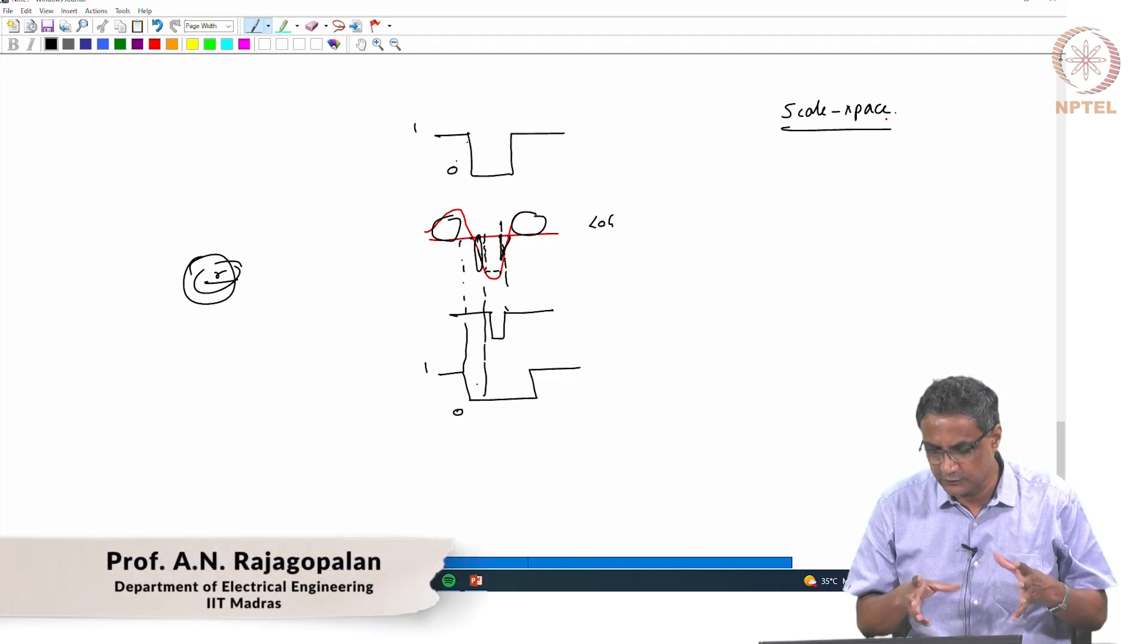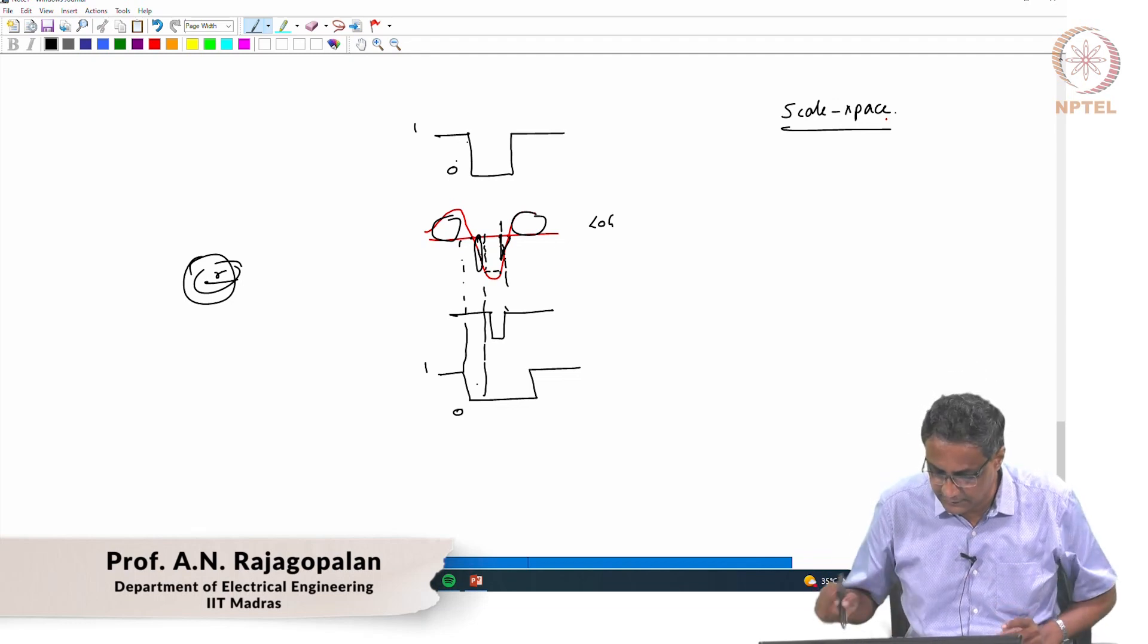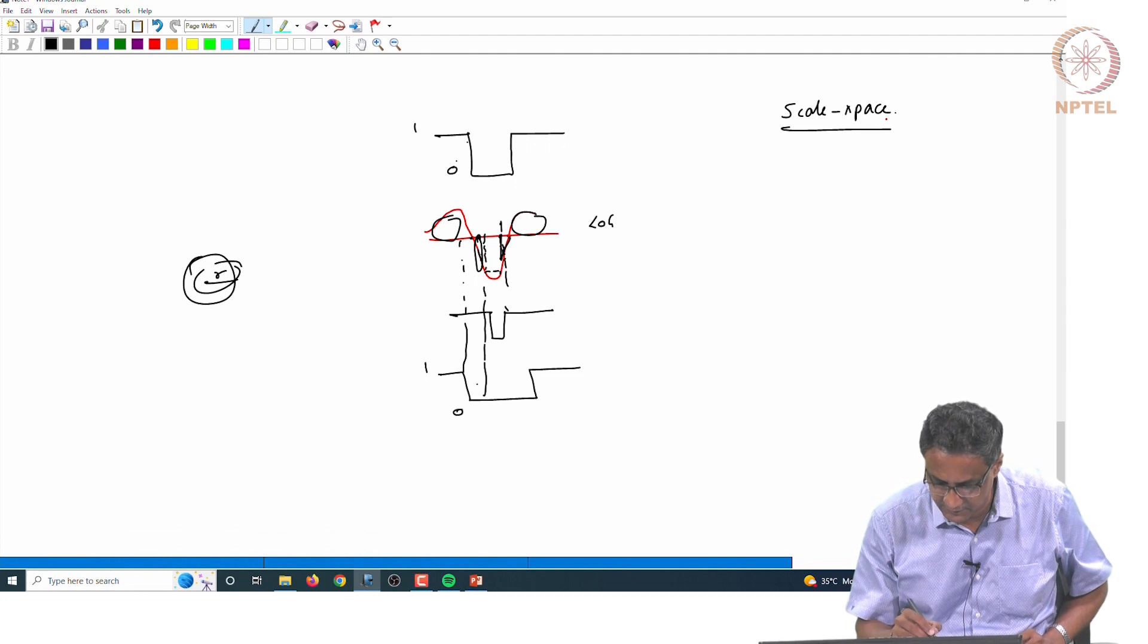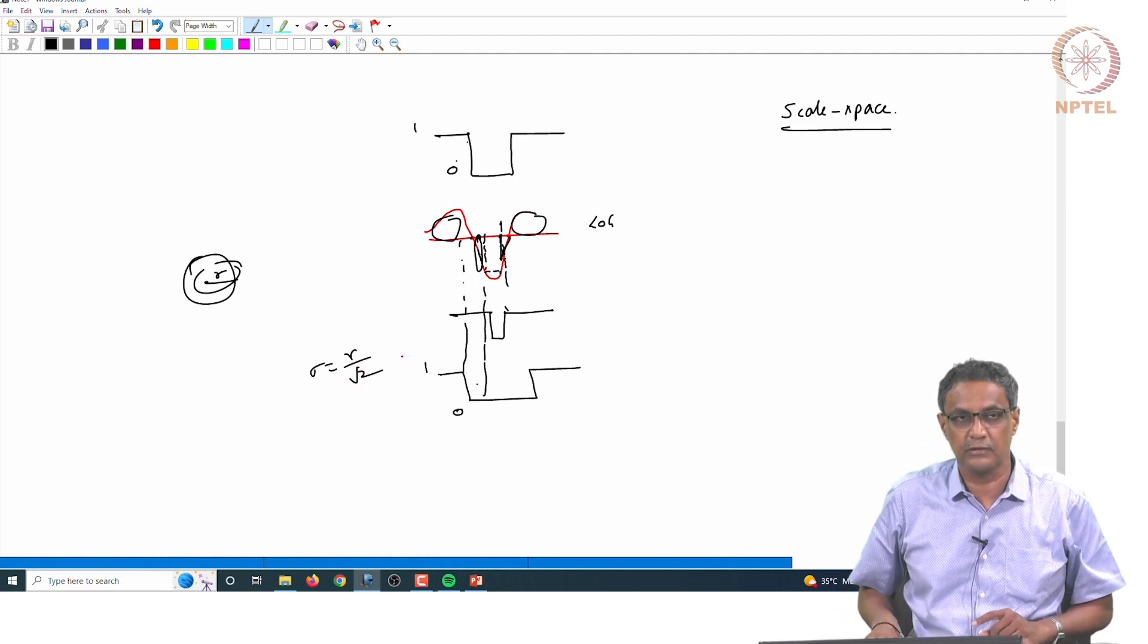So when you say scale space, you can relate space to your image grid and then scale to the actual sigma which you are going to use. Let me tell you what is that sigma - sigma is r by root 2, but this you have to show.